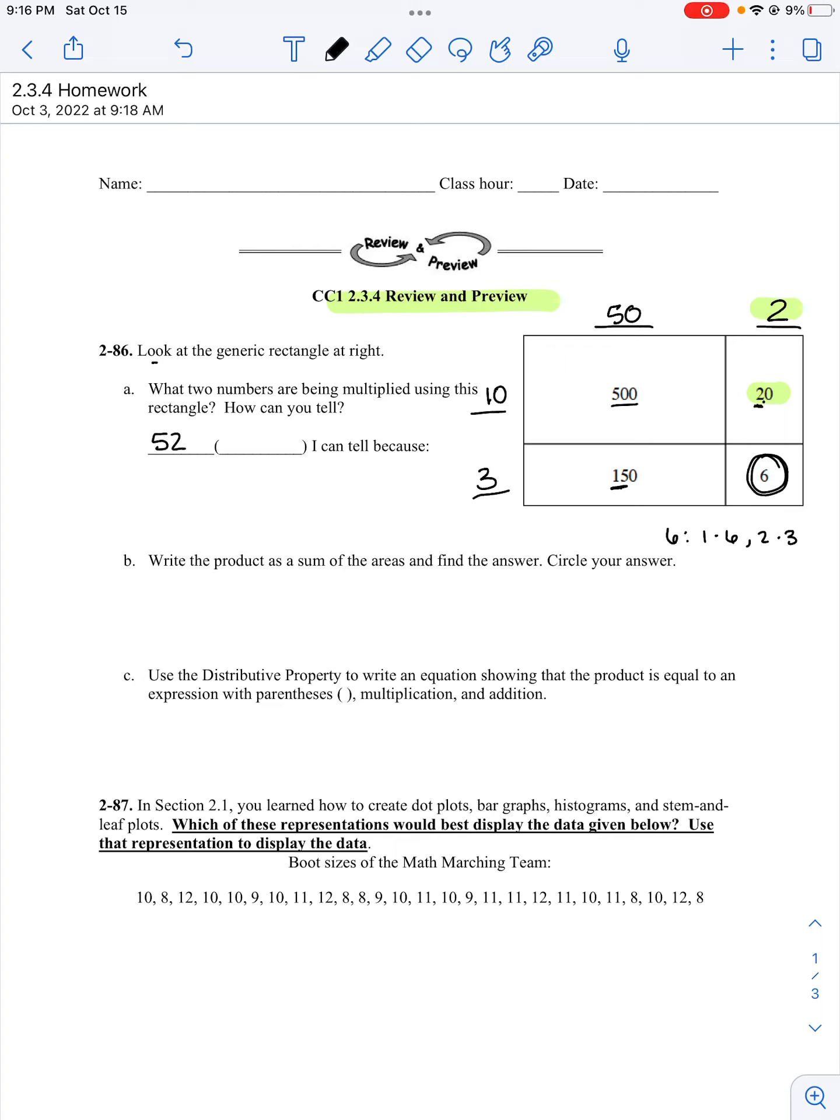So my 2 numbers being multiplied are 52 and 13. I can tell because 6 is a product of 2 and 3. Once I figured out where those numbers were placed, I could use division to find the other parts.